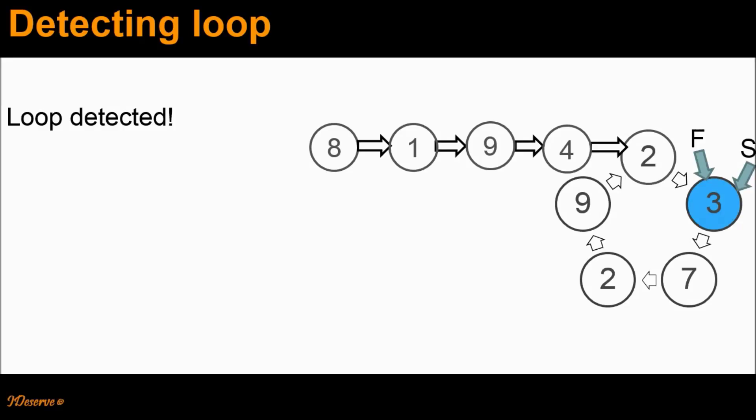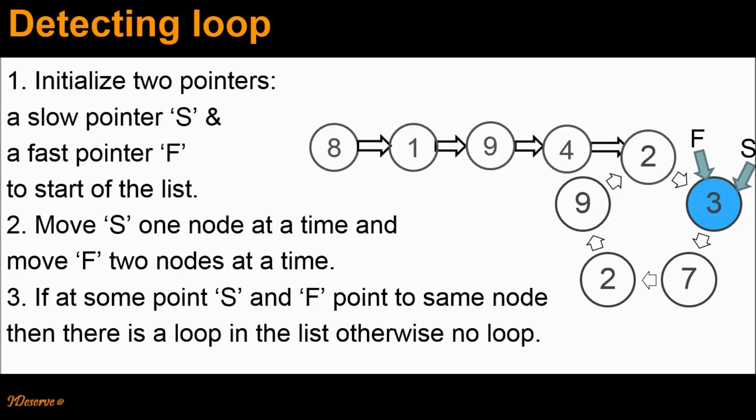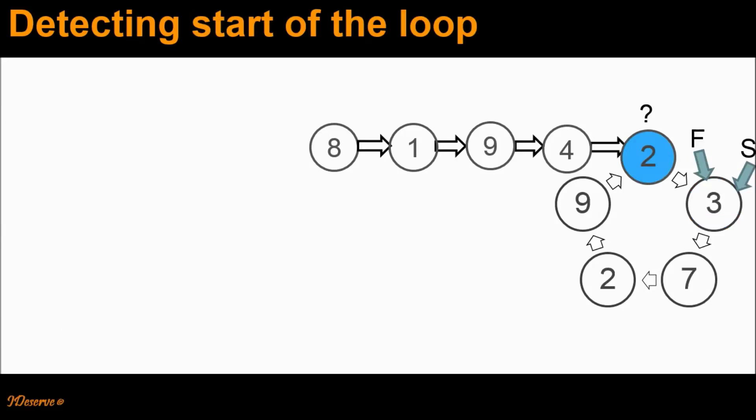Therefore we say that there is a loop in this linked list. Please note that if there would not have been any loop in the linked list, then F would reach the end of the linked list before meeting S. In that case, we say that there is no loop. So we have used this algorithm to detect the loop. Having detected the loop, let's now see how we can detect the start of the loop — that would be node 2.